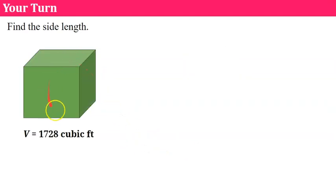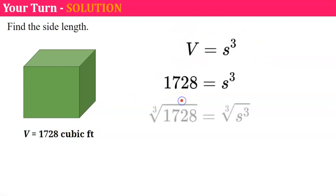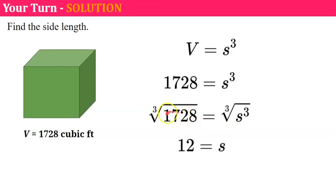Your turn — here's a cube and its volume; solve for the side length. Please pause and come back when you're done. Welcome back. We start with our volume formula V equals s cubed, replace V with 1,728, and find the cube root of both sides. Since 12 cubed equals 1,728, the side length is 12 feet.